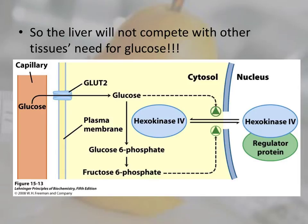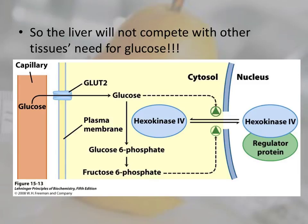GLUT2 is a transporter that allows glucose to enter through essentially diffusion, so the concentration of glucose on the outside equals that on the inside. That's what makes the liver and pancreas special — the pancreas needs to know the exact glucose conditions outside because it produces insulin, glucagon, and somatostatin. The other glucose transporters for other cells aren't as easily affected and don't necessarily match inside to outside concentrations.